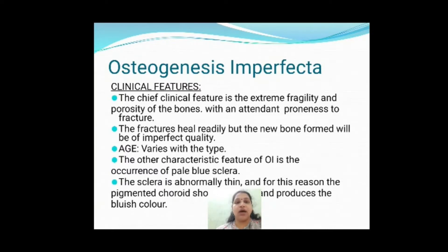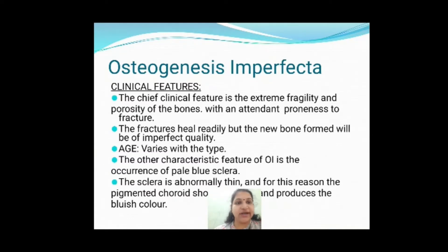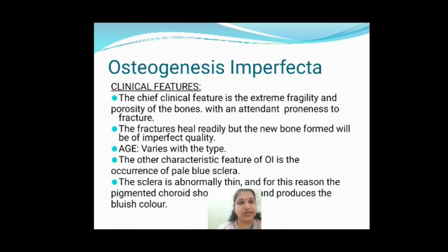The other major feature is blue sclera — the sclera will be pale blue. The reason the sclera appears blue is because the pigmented choroid behind it shows through. This happens again because there is defective collagen. So the two main features of osteogenesis imperfecta are bone fragility and blue sclera.